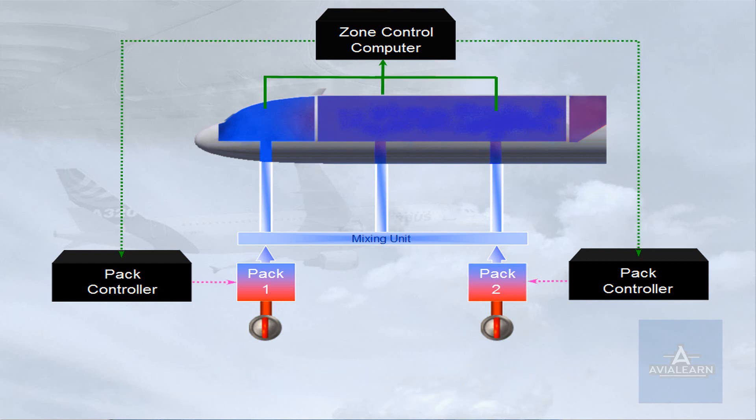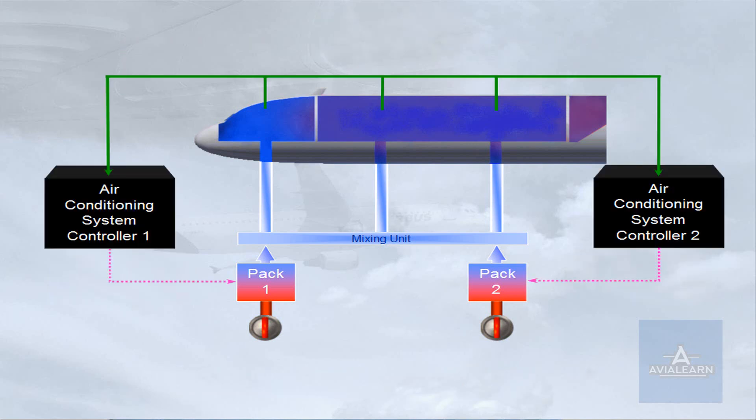The zone controller and pack controller are fully integrated into an air conditioning system controller. Each air conditioning system controller comprises two lanes. In case of one lane failure, the second lane takes over. In case of both lanes failure, the related pack is lost.